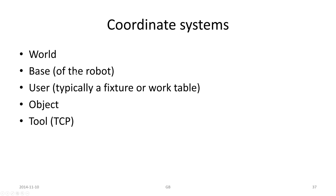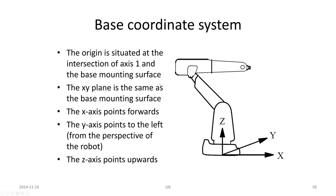Some considerations related to coordinate systems and the world, base of the robot, user, object, tool. The base coordinate system is the origin's intersection of axis one, the base of the surface. The x-y plane is the same as the base mounting surface. The x axis points forward, the y axis to the left, and the z upwards. Or just think that the z is always upwards, then the y we can automatically determine.